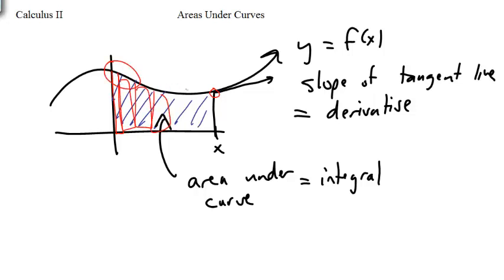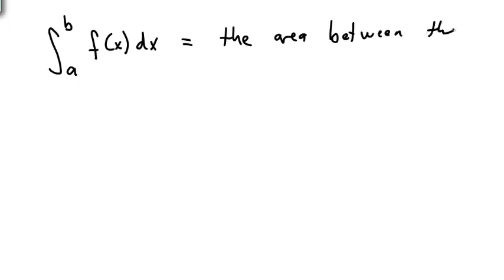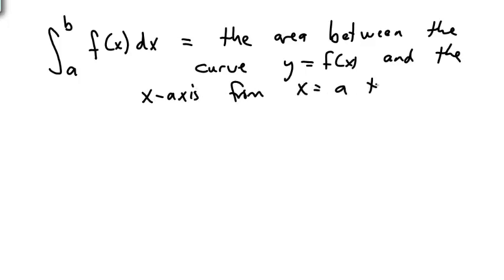Over here the values are fairly high, down here the values are less, but you're still getting some area. You're adding up all this amount. Now, the way that we represent an area under a curve is in the following fashion. We use this weird notation. It's weird. What does it mean? It means the area between the curve given by y equals f of x. That's what the function on the inside says. It says what's the function that we're looking at.